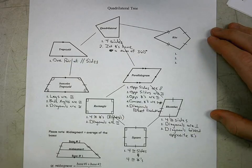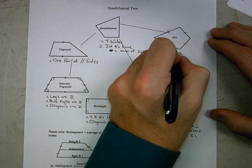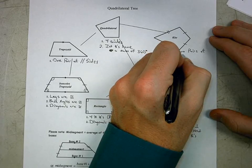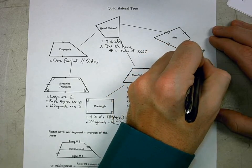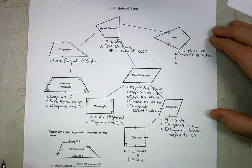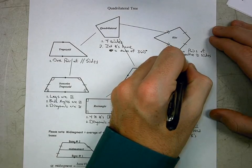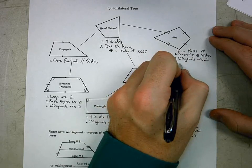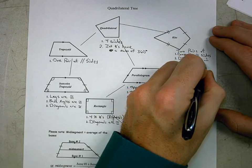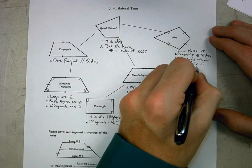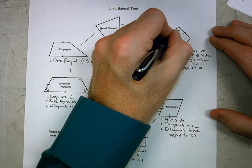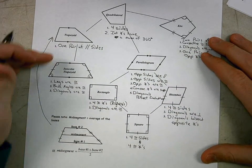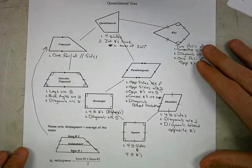Our last quadrilateral is a kite. A kite has two pairs of consecutive congruent sides, perpendicular diagonals, and one pair of opposite angles congruent. We also have a note about the mid-segment, which applies to a trapezoid and an isosceles trapezoid and is used for finding the length of that mid-segment.